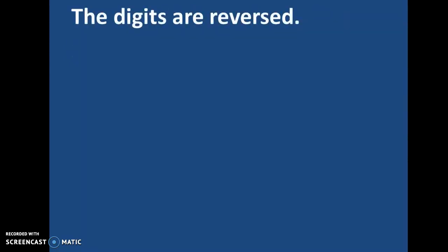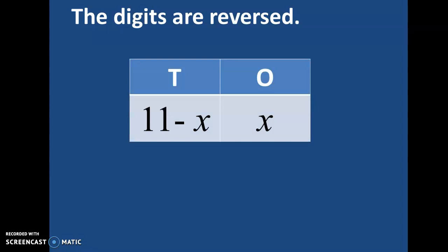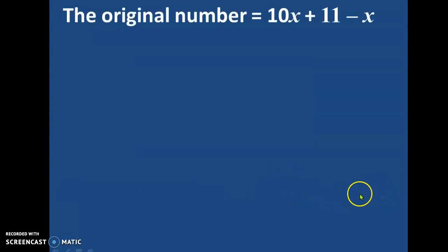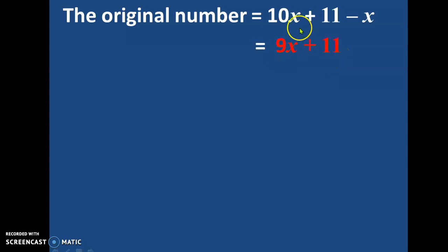The number therefore is 10X plus (11 minus X). Now, in the problem the digits are reversed — at the 10's place we get the digit of the 1's place and at the 1's place we get the digit of the 10's place. The original number simplifies to 9X plus 11, because 10X minus X is 9X.